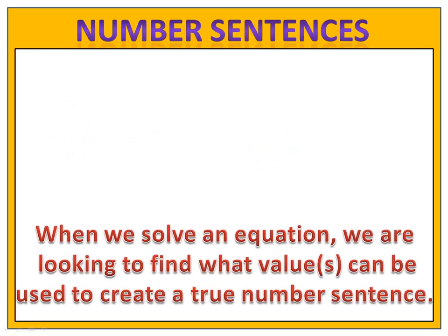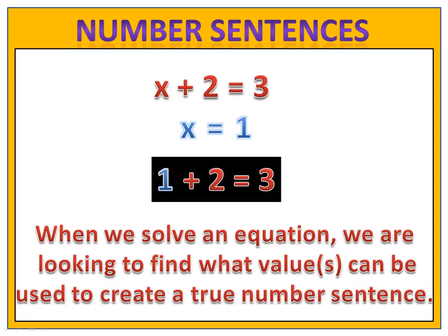What's most interesting is that when we solved an equation, we were actually looking to find the value for x that we could put in its place to make the equation a true number sentence. For instance, when we solved x plus 2 equals 3, we got x equals 1. If we put 1 in place of x, we have 1 plus 2 equals 3 — both sides have a value of 3, so that's true.